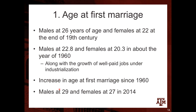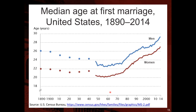After the 1960s, there was actually an increase in age at first marriage. In 2014, men on average were 29 years old when they first got married, and women were 27 years old. Looking at the graph from 1890 to 2014, you can see age at first marriage fell from around 26 to 22.5 for men and similarly declined for women, then started to increase again for both.